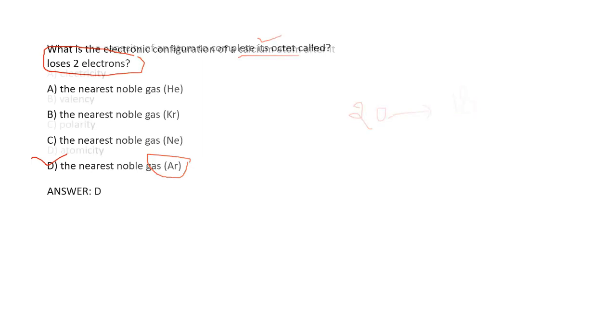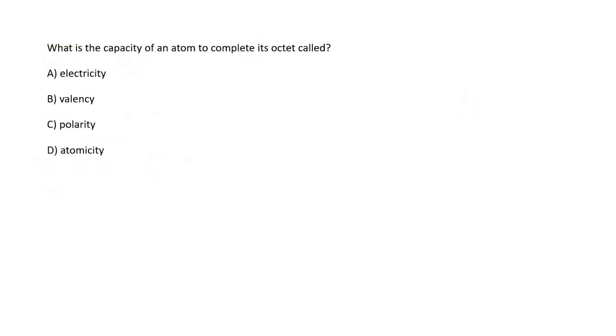What is the capacity of an atom to complete its octet? The capacity of an atom to complete its octet is called valency. Option B is the right answer.